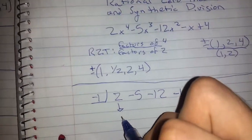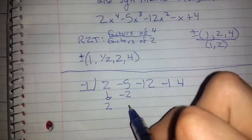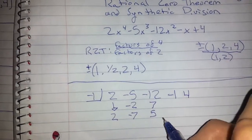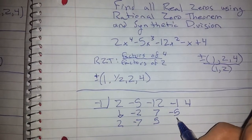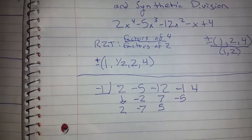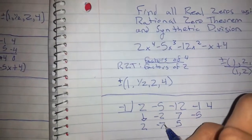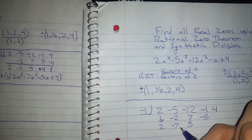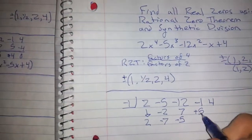Through the process of synthetic division, you bring down the first digit, and that would be a 2. This is going to become a negative 2. You add these values here for negative 7. This is going to be a positive 7. This will be 5. I'm sorry, this is a negative 7. Negative 5, and this is a positive 5.